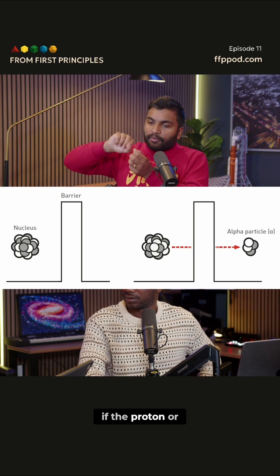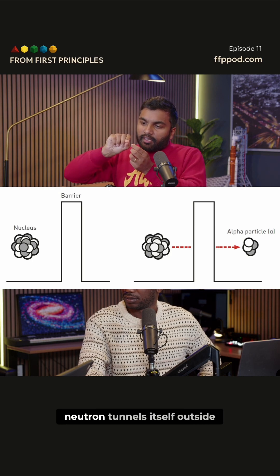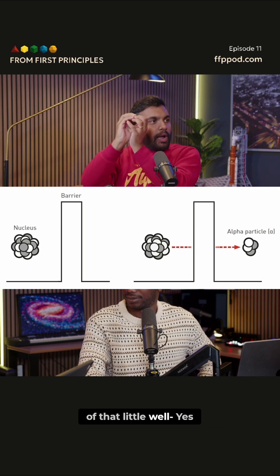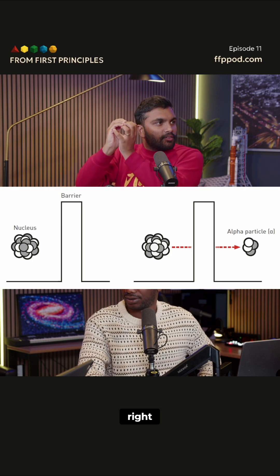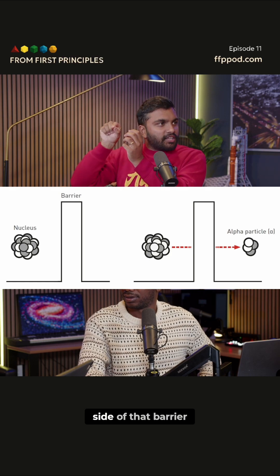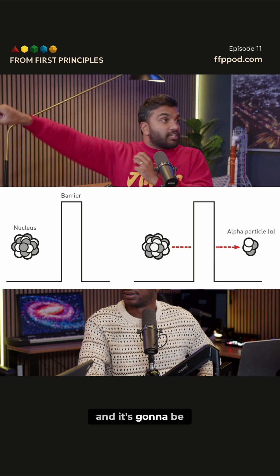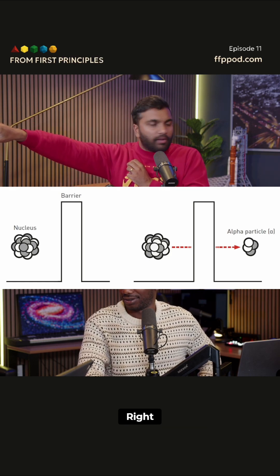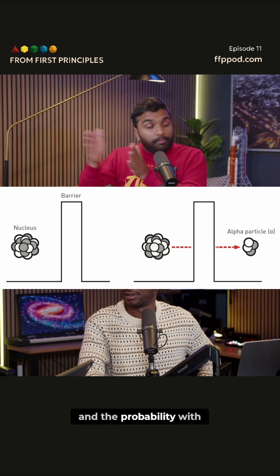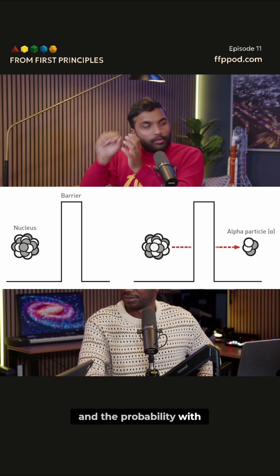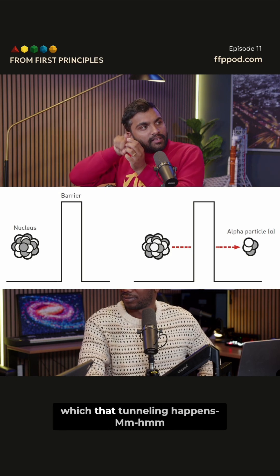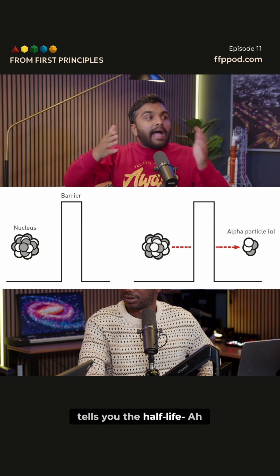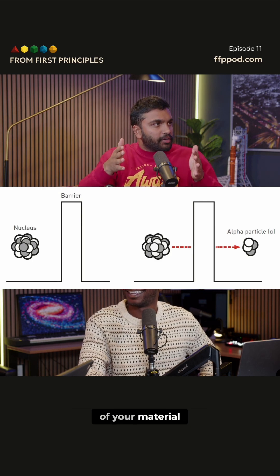If the proton or neutron tunnels itself outside of that little well, it's going to find itself on the other side of that barrier, and it's going to be going with pretty high energy.